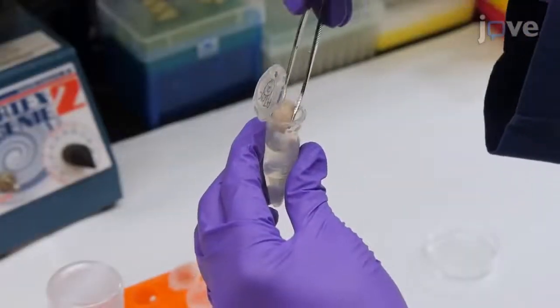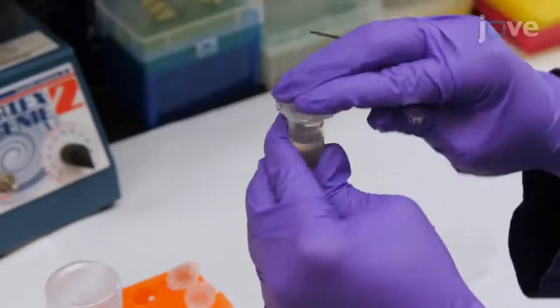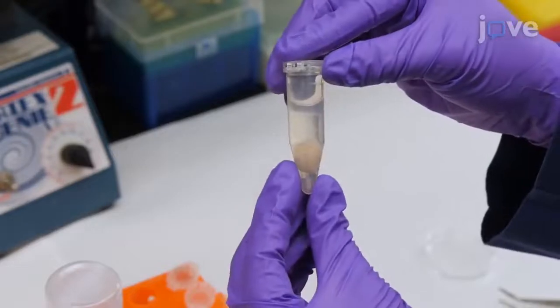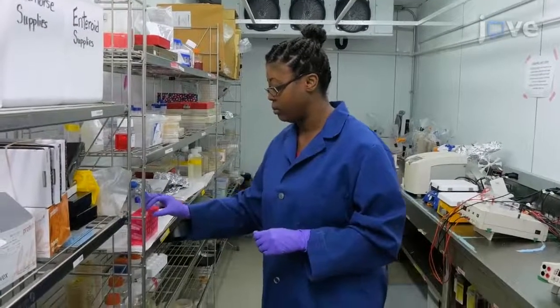Start by placing the freshly isolated brain of an anesthetized and then perfused mouse in 4% PFA in a 50 mL tube. Incubate the brain for 24 hours at 4 degrees Celsius.